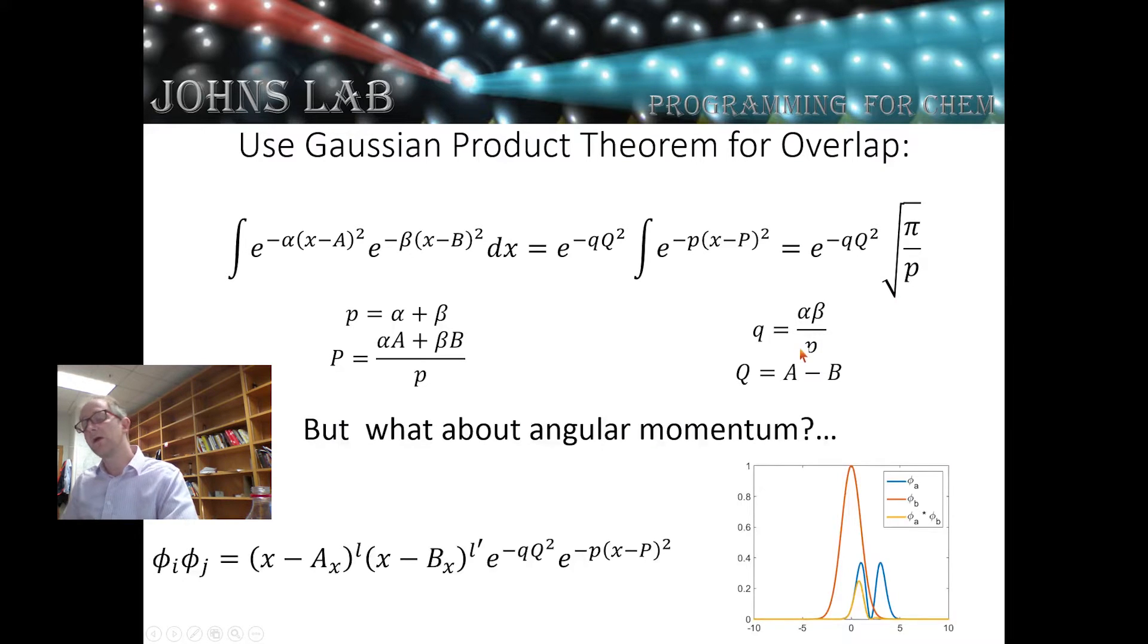This situation changes significantly when we introduce angular momentum. When we introduce angular momentum, the product of basis functions a and b no longer has everything centered at point p; we have these things centered at the original atom point, these polynomials.